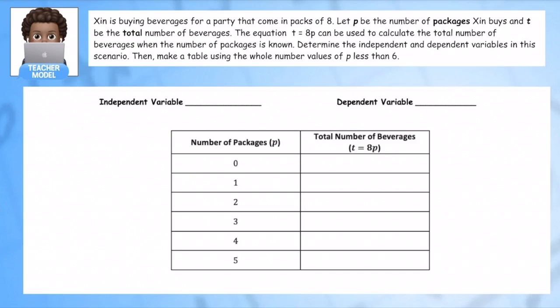Xin is buying beverages for a party that comes in packs of 8. Let P be the number of packages Xin buys, and T be the total number of beverages. So I already know there's a relationship between the packs and the total number. And we have the equation T equals 8P can be used to calculate the total number of beverages when the number of packages is known. Determine the independent and dependent variables in this scenario. Then make a table using the whole number of P less than 6. So I want you to think for a minute which one makes the other one happen, and let's use this equation to help us.